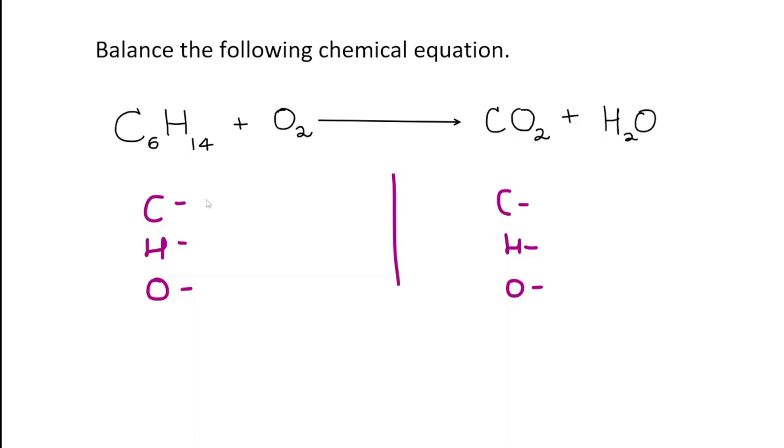Now, we have six carbon atoms here. Getting six on the right-hand side is very easy because the only thing you can do here is put a six. That will make the number of carbons six. Carbon is all good.